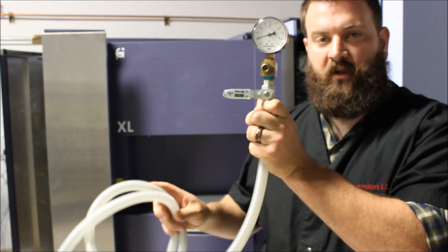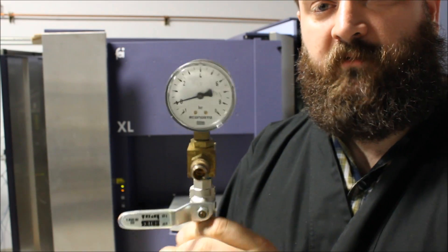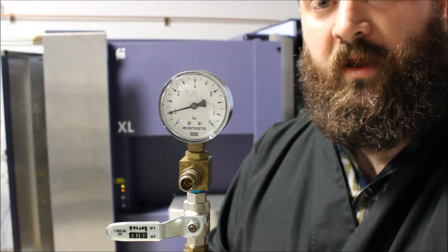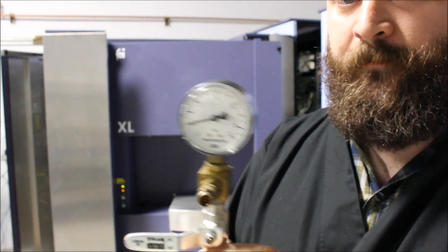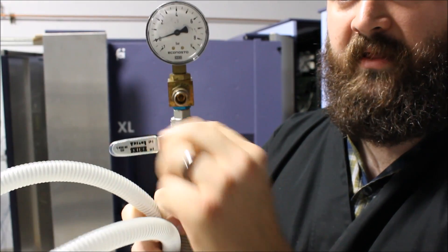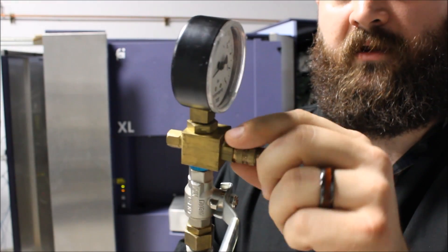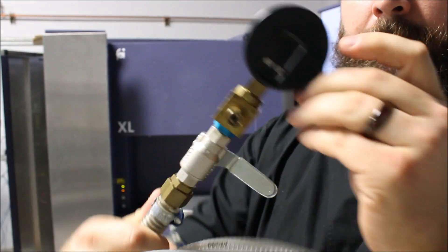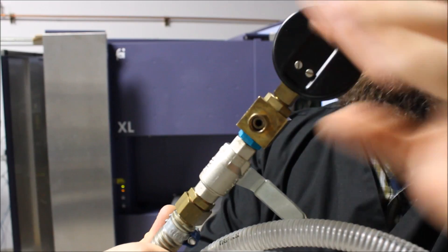The first thing you'll need is this purge valve assembly and the gauge reads out in bar. It has a little valve for the bleed line and a quick connect on one side and a screw-on connection on the other.